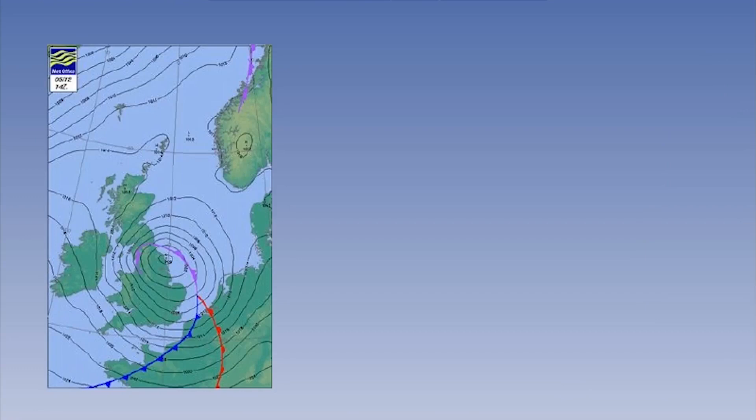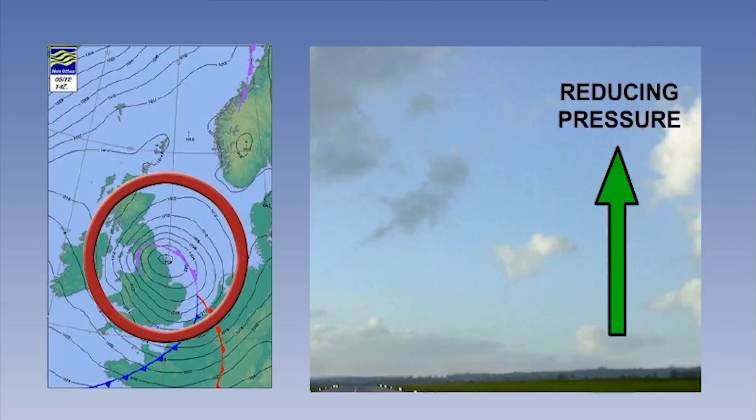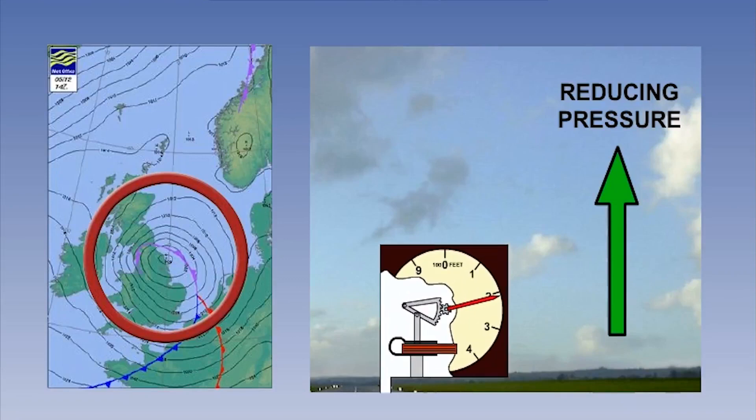The forces generated by horizontal pressure differences give rise to horizontal air movement and therefore winds. The vertical variation of pressure gives us the ability to measure the height of an aircraft above a surface. The instrument that measures this variation is the altimeter.